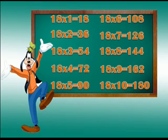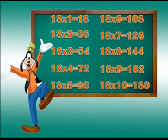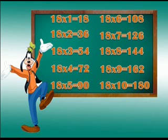Kids, I repeat table of 18, please follow me. 18 1s are 18, 18 2s are 36, 18 3s are 54, 18 4s are 72, 18 5s are 90, 18 6s are 108, 18 7s are 126, 18 8s are 144, 18 9s are 162, 18 10s are 180.